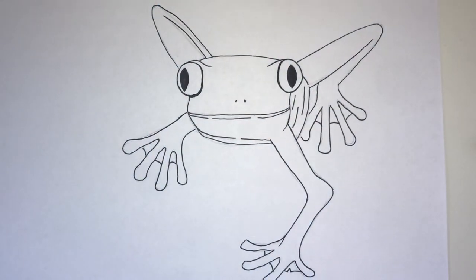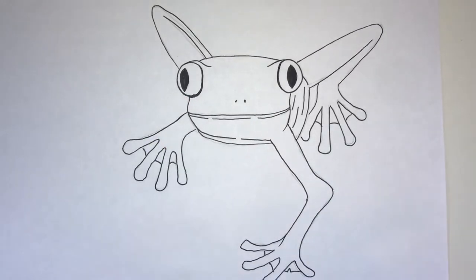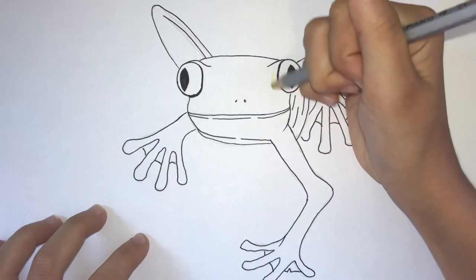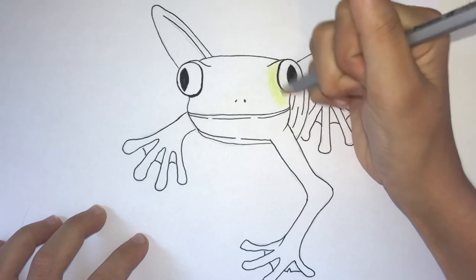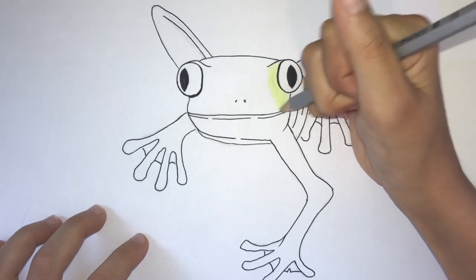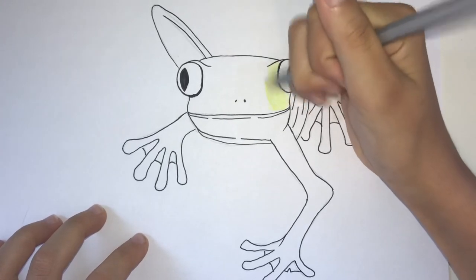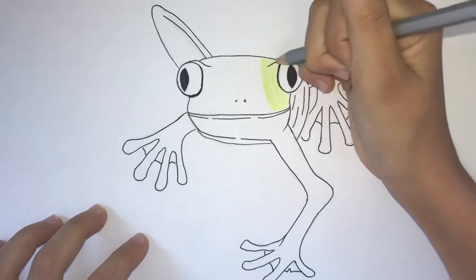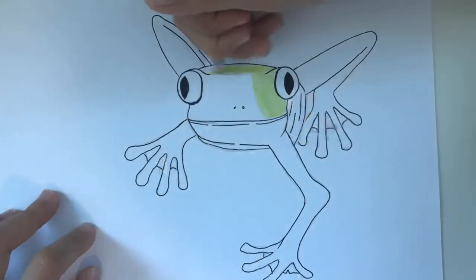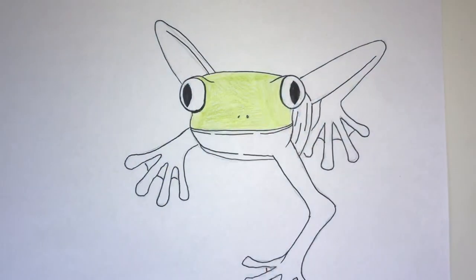Now that that part's done we can start on the coloring, so take your green colored pencil and just color the head. Cool, now take your red colored pencil and start coloring the eyes.